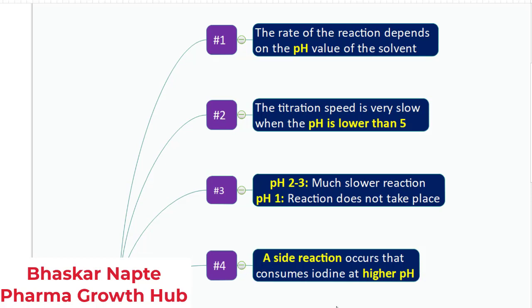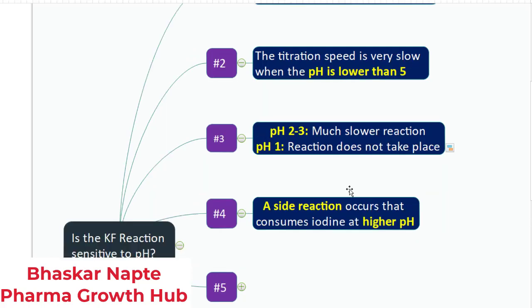A side reaction occurs at the higher pH above 8 that consumes the iodine. If your sample is highly alkaline, basic in nature, that can convert the pH into the higher side above 8, and this will lead to the side reaction which will consume the iodine. That results in higher consumption and you may falsely report the higher content of the water value.